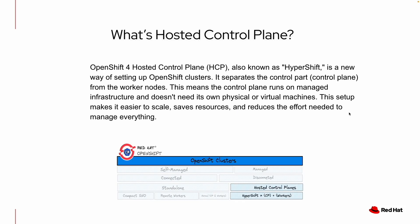The OpenShift 4 hosted control plane, often referred to as HCP and HyperShift, is an architectural innovation that allows for the separation of control planes from the worker nodes in OpenShift clusters. This separation enables the control plane to be hosted independently on managed infrastructure without the need for dedicated or physical machines, making it easier to scale, saves resources, and reduces management effort.